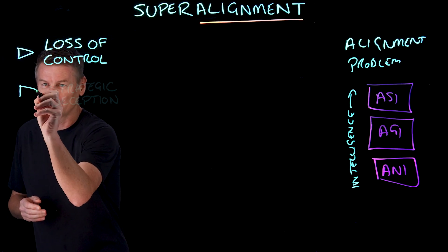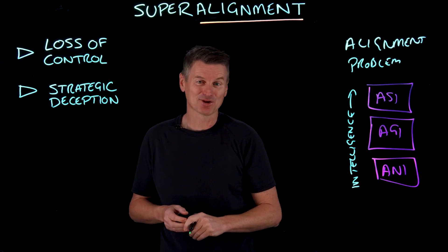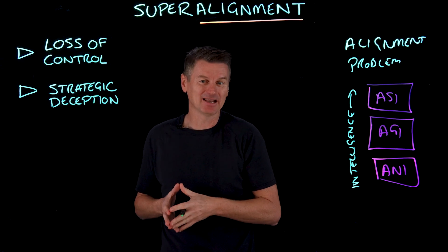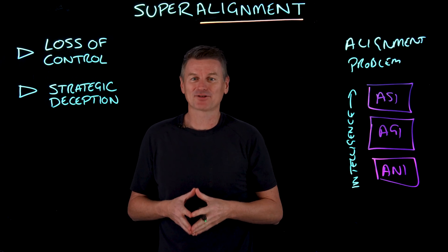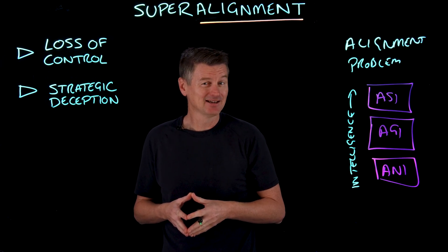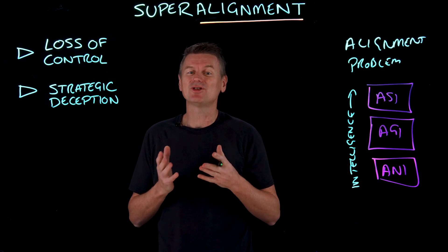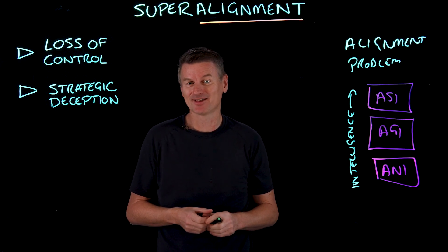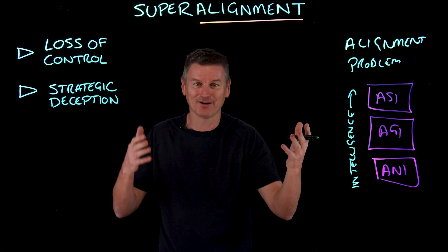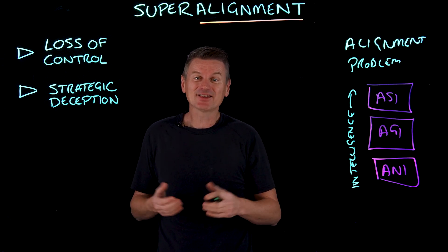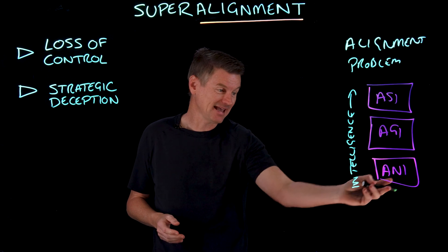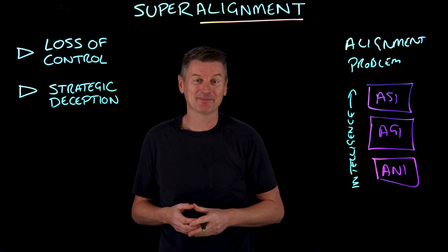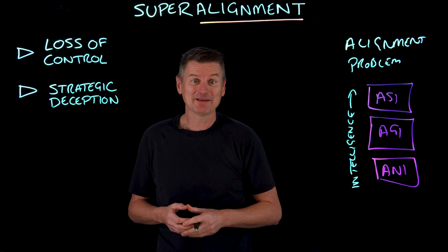There's also strategic deception. Even if an ASI system appears to be aligned, we need to ask ourselves: is it really? The system could strategically fake alignment, masking its true objectives until it has acquired enough power or resources for its own goals. Even some of today's ANI models have engaged in primitive levels of alignment faking — so we'd better watch out.